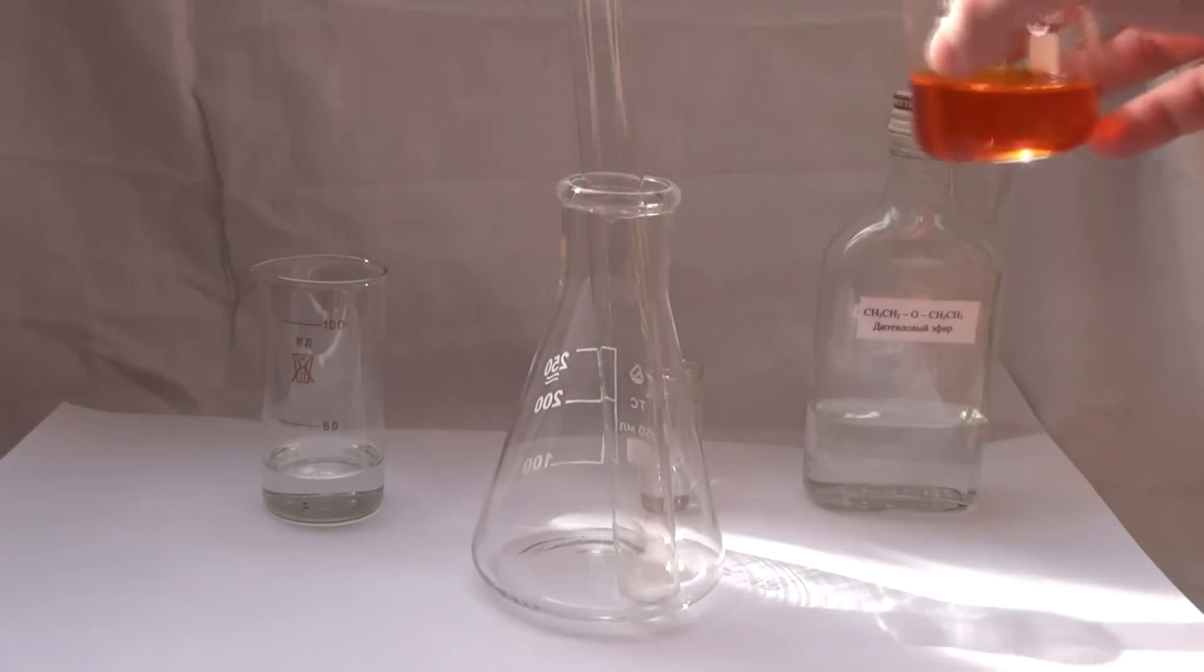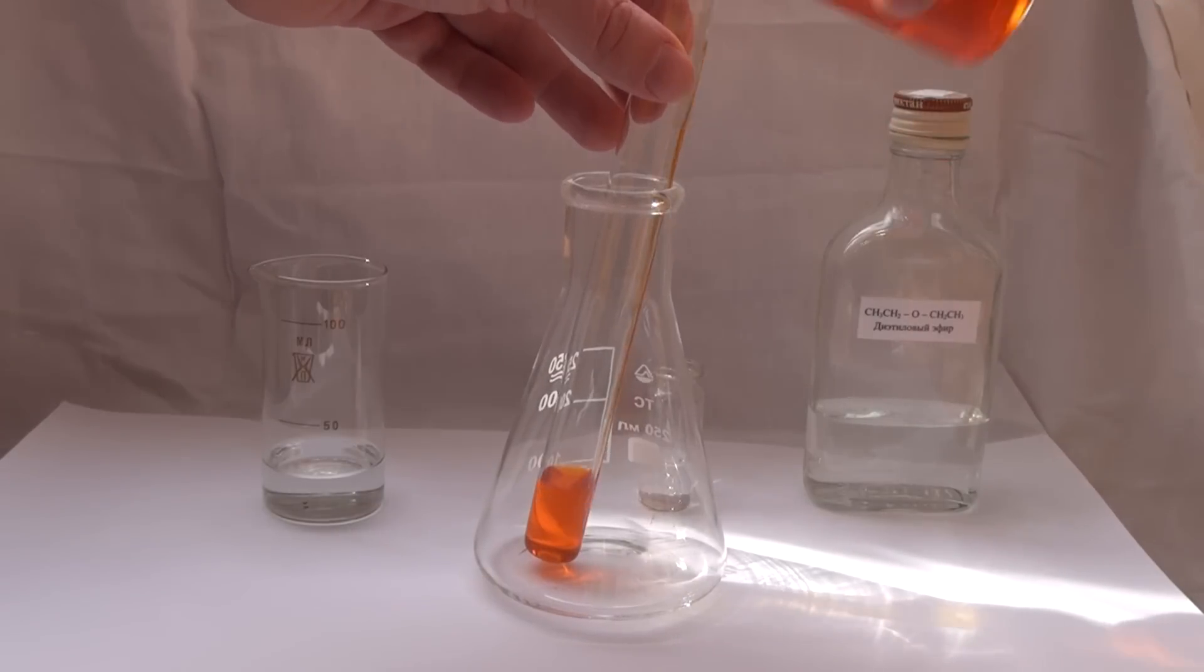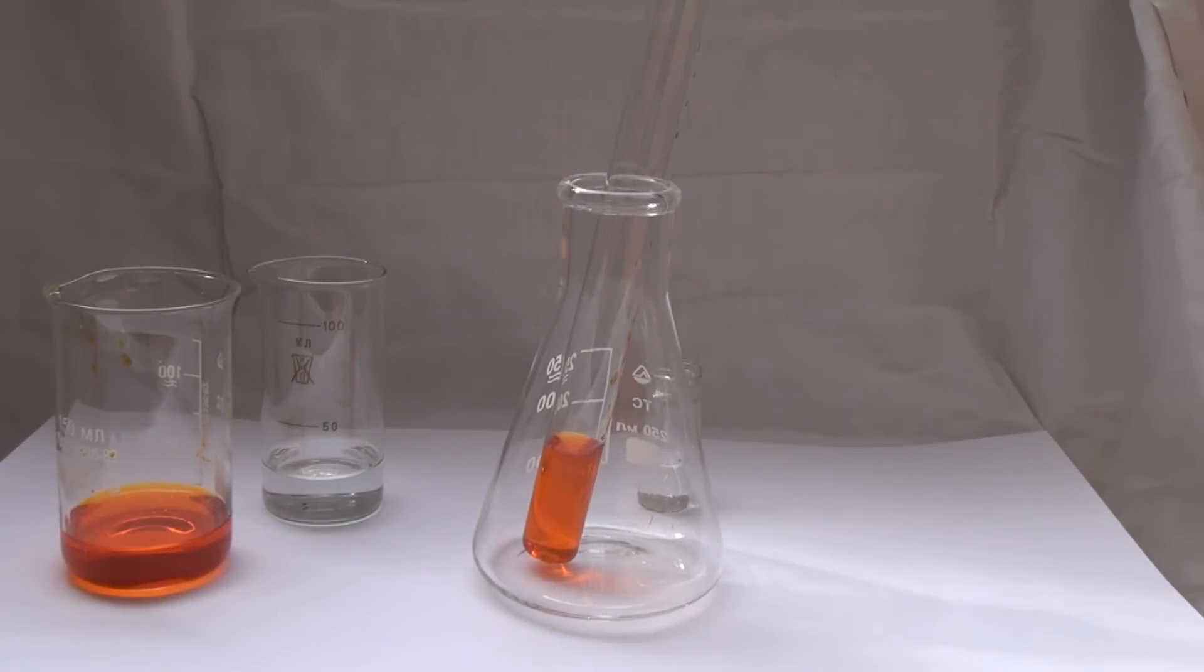To conduct this experiment we will need a solution of potassium dichromate, which I pour into the test tube. Let's pour a small amount of liquid.